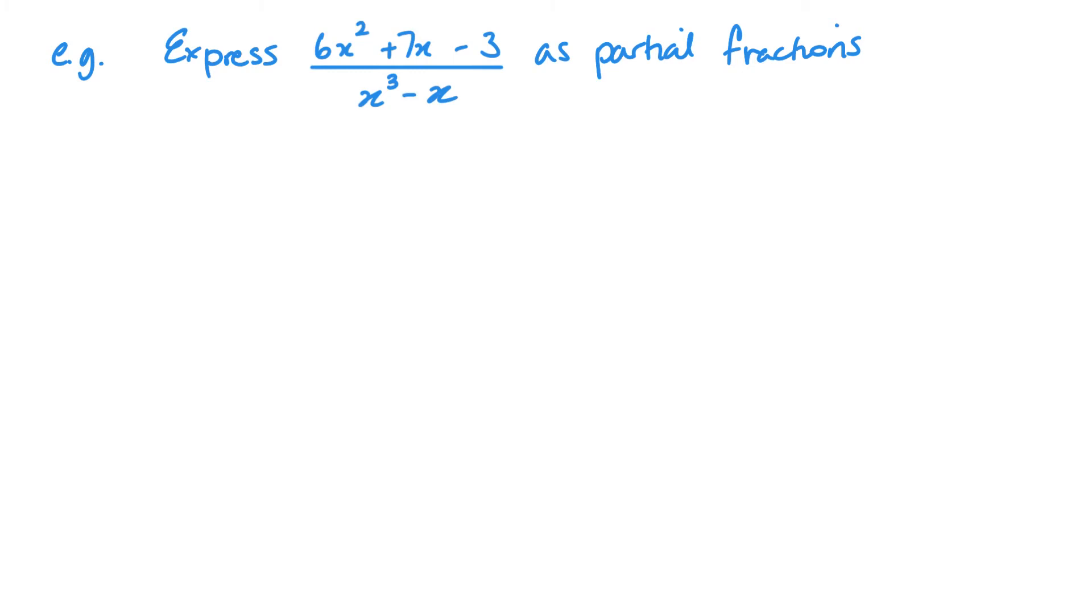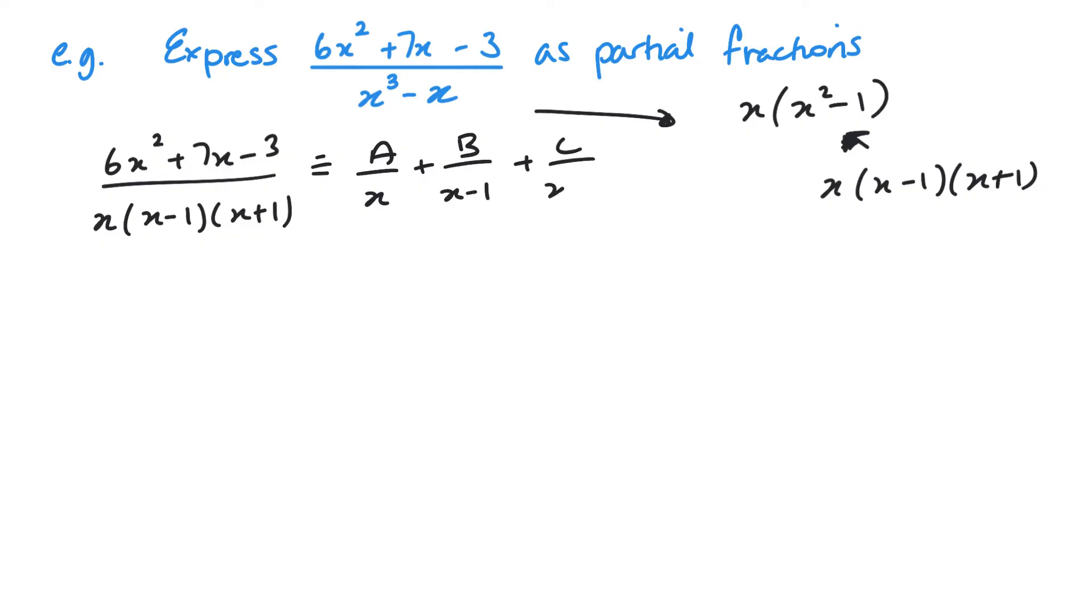Second example. If I've got an example like this where the bottom isn't factorised, that's where I want to start. So I want to factorise that bottom. Let's write at the top 6x squared plus 7x minus 3. Factorise at the bottom. X would come out, leaving x squared minus 1. And this is the difference of two squares, isn't it? And that I can split up again. So this is x, x minus 1 and x plus 1. So that's what I've got on the bottom: x, x minus 1, and then x plus 1. That means I've actually got three factors.